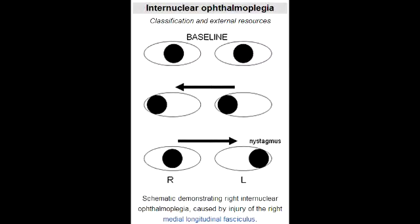In what condition would there be bilateral damage to the MLF? Bilateral damage to the medial longitudinal fasciculus would occur in multiple sclerosis. In what condition would there be unilateral damage to the MLF? Unilateral damage to the medial longitudinal fasciculus would occur in stroke.